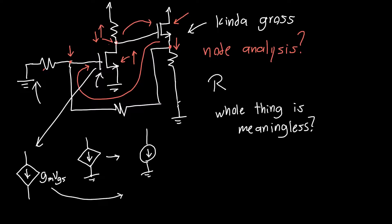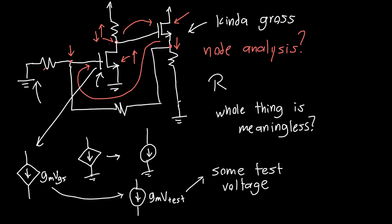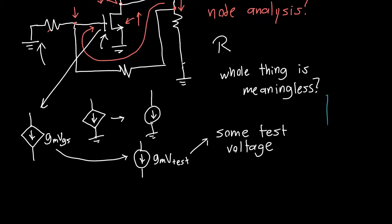take one of those sources and replace them with a current source of value gm*Vtest, and Vtest is just some test voltage. It's some test voltage that lets us get this feedback loop started, and then we can analyze the voltages as we go around the loop, and then we can see how much feedback we have. So now the only difficulty is, how do we define a number, how do we define this number R such that it